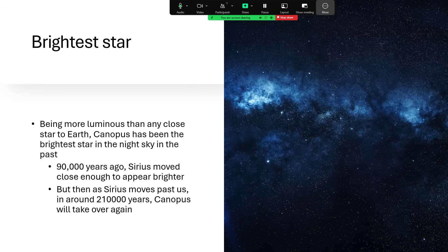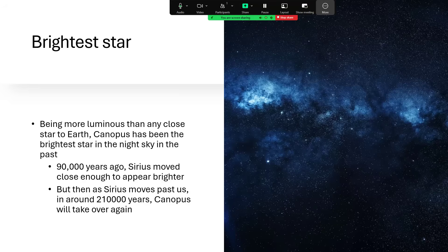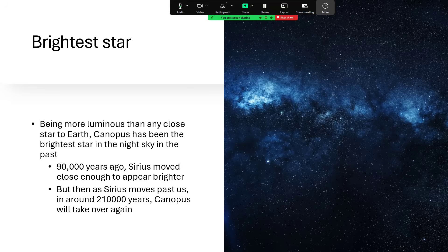And Sirius, of course, is now only just over eight light years away, so a lot nearer. Even though it's less powerful, it seems brighter to us. But give it 210,000 more years, and Sirius will have moved past us and away, and Canopus will take over again as being the brightest star in the night sky. I wouldn't suggest you try and wait for that.